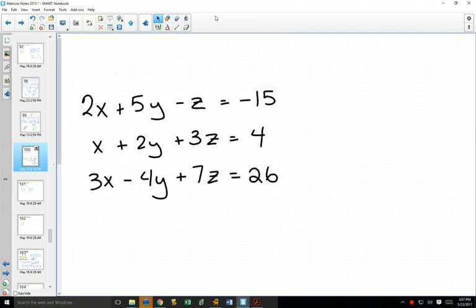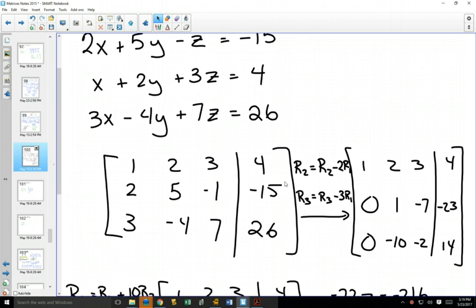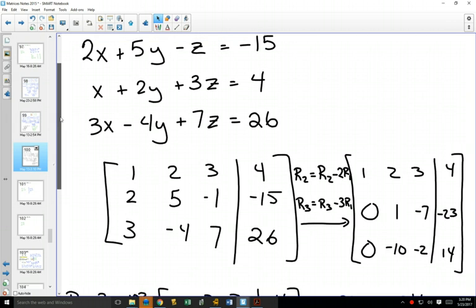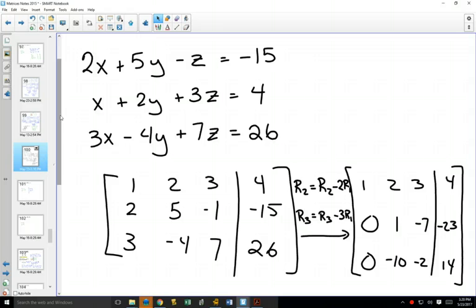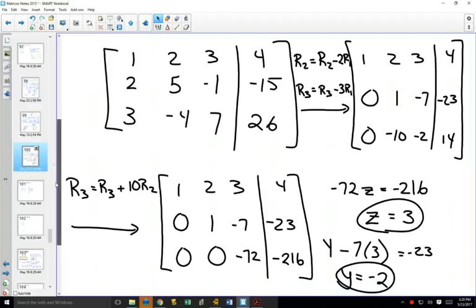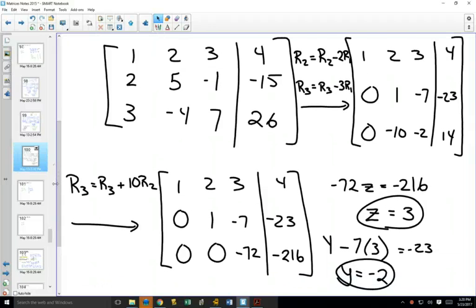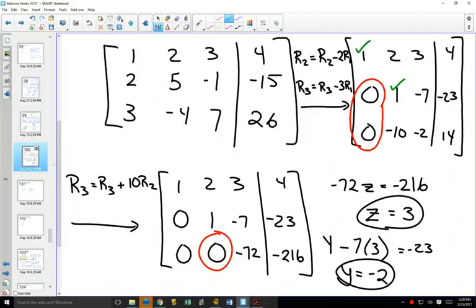Our goal: first this, then this. Part of those goals is having a 1 here and a 1 there that makes your life easier. Not necessary, but easier. And then we get z is equal to 3, y is equal to negative 2, and x is equal to negative 1.